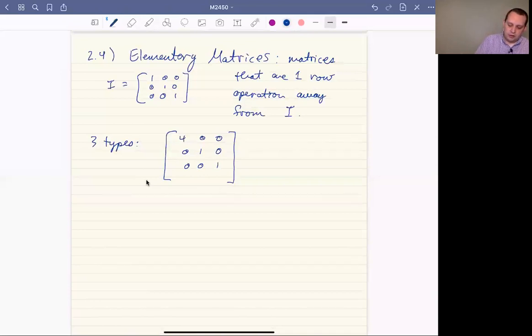You could also add a multiple of one row to any other. So you could say, take row two, multiply it by three and add it to row three. So if you were to do that,